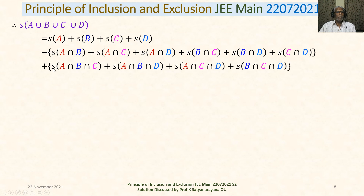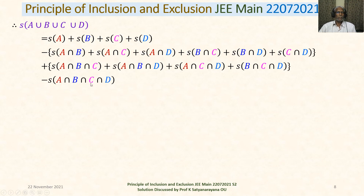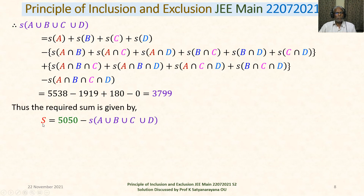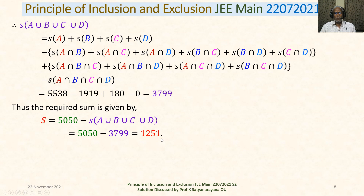Applying the inclusion-exclusion principle: S(A ∪ B ∪ C ∪ D) = [S(A)+S(B)+S(C)+S(D)] − [pairwise intersections] + [S(A∩B∩C) + S(A∩B∩D) + S(A∩C∩D) + S(B∩C∩D)] − S(A∩B∩C∩D). All these values have been computed, giving S(A ∪ B ∪ C ∪ D) = 3799. Thus the required sum is S = 5050 − 3799 = 1251.